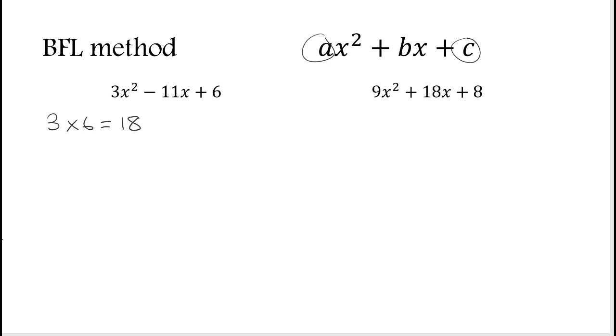We need two numbers that multiply to make 18 and add to make the b, which is minus 11. Now you might be able to work this out, but I would always recommend listing all the factor pairs because then you'll always find it. When listing our factors, just go up from 1: so 1 times 18, 2 times 9, 3 times 6. Now 4 doesn't go in, 5 doesn't go in, and 6 we've already got. So as soon as you get to a repeat, you know you're finished.